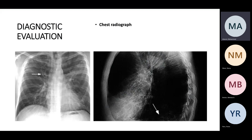Diagnosis — this is a simple chest X-ray. The first picture on the left shows part of the bronchiectasis and the dilated airway. These are the dilated bronchial walls visible on imaging.